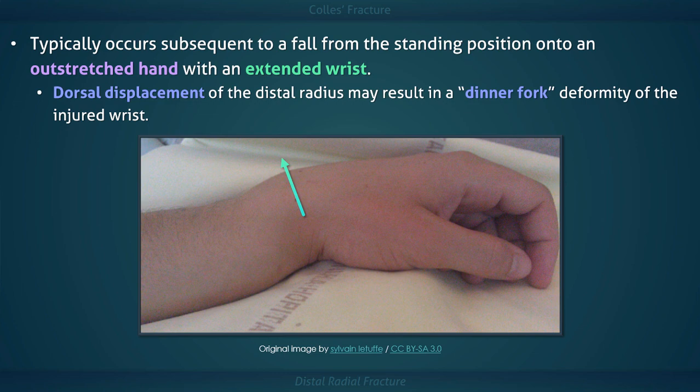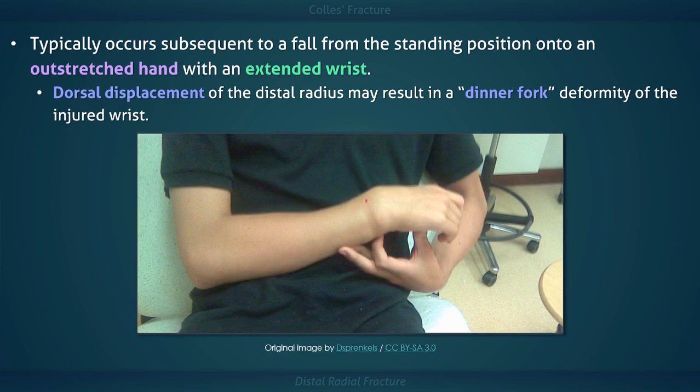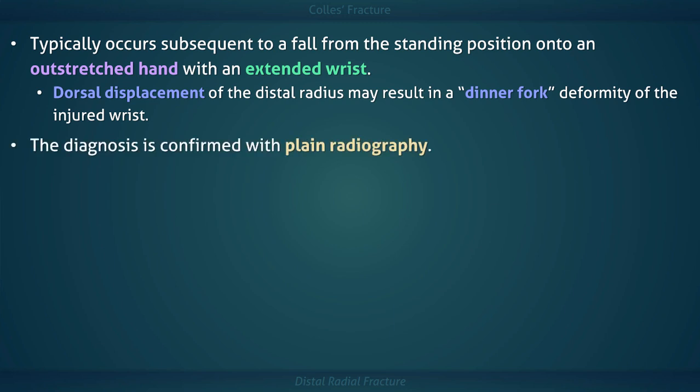Dorsal displacement of the distal radius may result in a dinner fork deformity of the injured wrist. The diagnosis is typically confirmed with plain radiography including anterior, posterior, lateral, and oblique views.